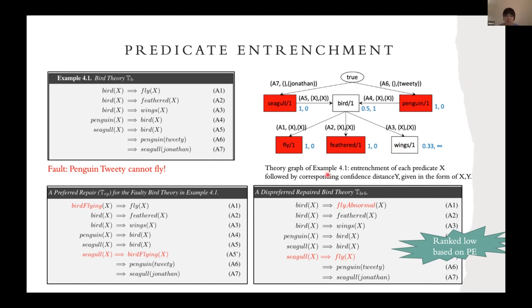The measurement is given in the paper, but we don't write it here. All the blue numbers here give you the corresponding predicates' entrenchment scores followed by the distance scores.